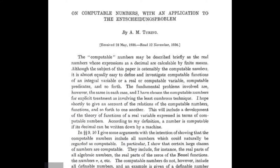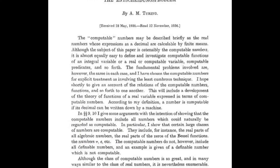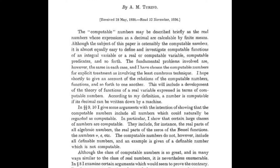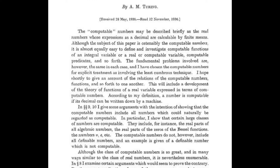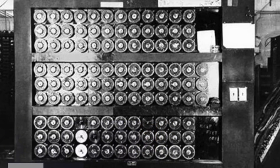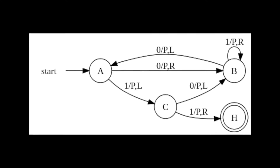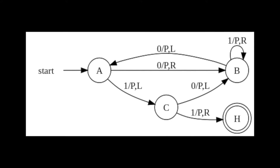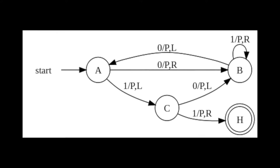In 1936, Turing published what became the most famous theoretical paper in the history of computing. It introduced the idea of an ideal machine that could solve any solvable problem using simple rules.